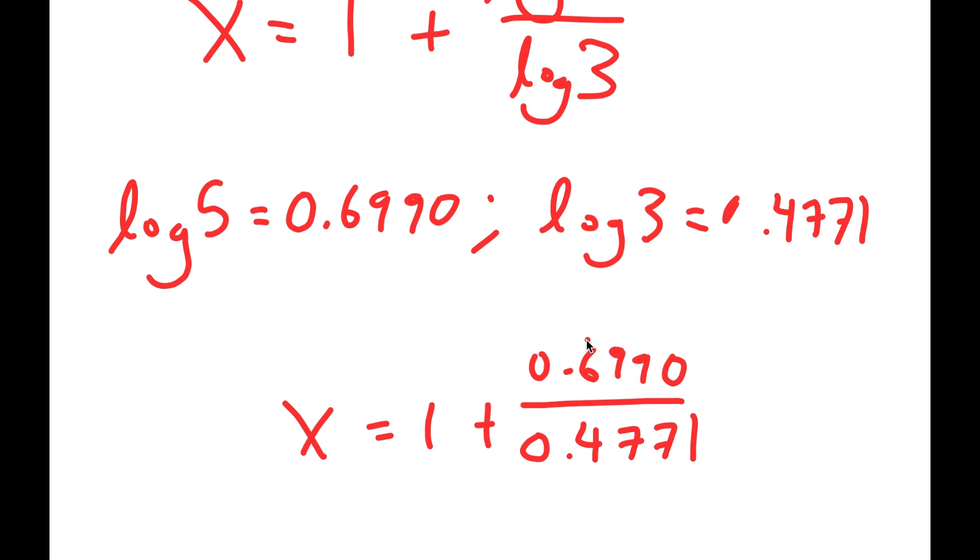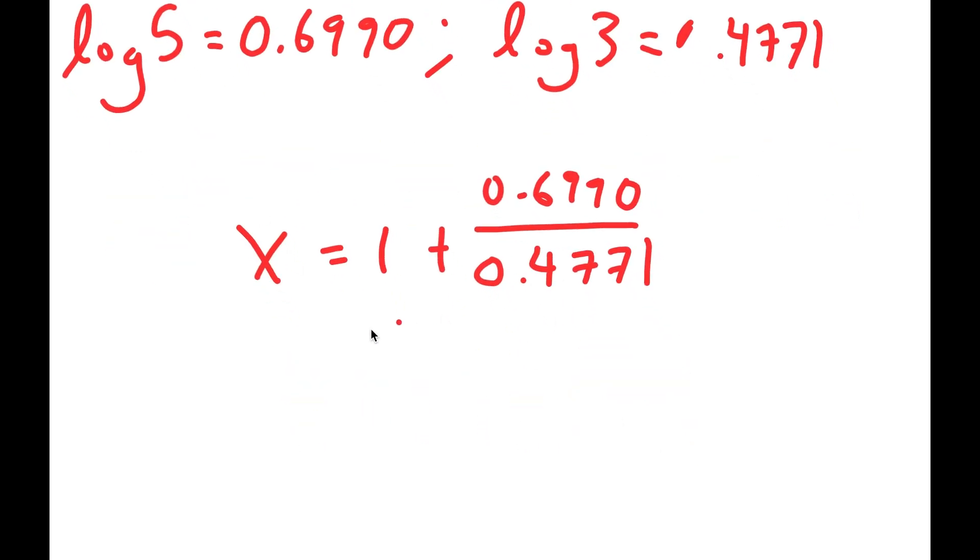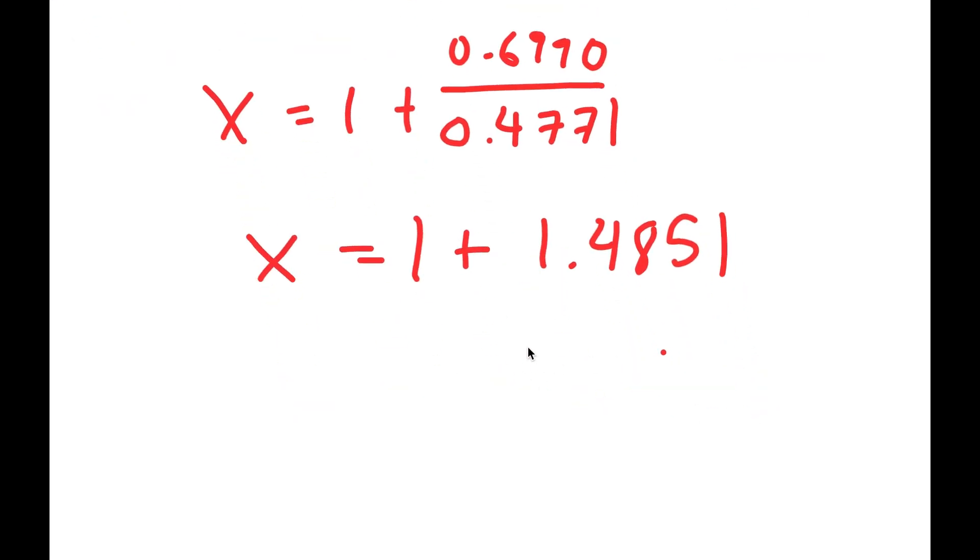Now 0.6990 over 0.4771 is equal to 1.4851. And 1 plus 1.4851 is equal to 2.4851.